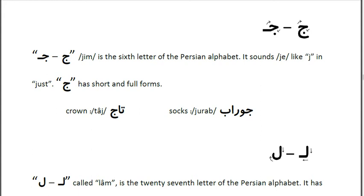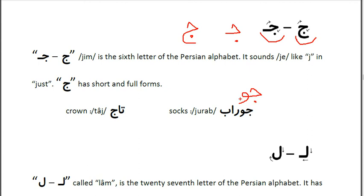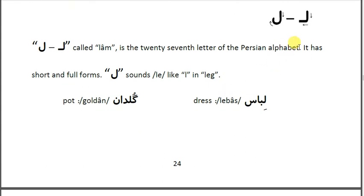The next letter is 'Jim.' The name is Jim but it sounds like 'J' in English. Jim has two forms — a full form and a short form. We have two sample words for Jim. The first one is Jim followed by 'Vav,' which sometimes sounds like 'oo,' so it reads 'Ju Rob' — ju rob. The next sample word for Jim is 'Todd.'